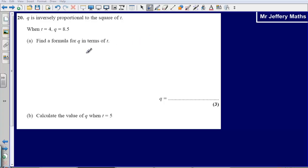This is question 20 from the 2008 calculator paper. Here we are told that q is inversely proportional to the square of t. When t equals 4, q equals 8.5, find a formula for q in terms of t.